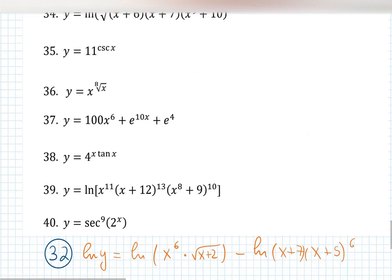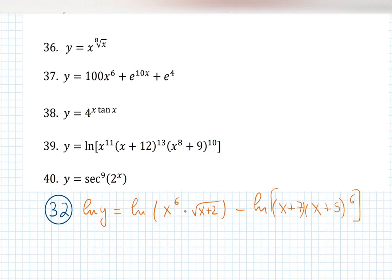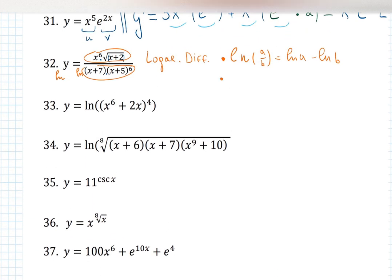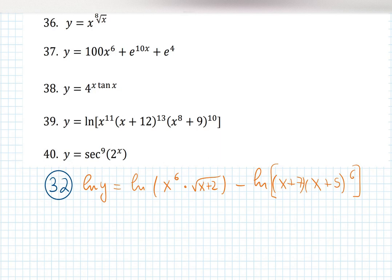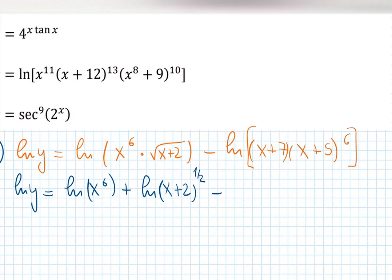Now I have a log of a product. The property for logs says log of a product is a sum of logs. I'll put brackets to show the products. So we get ln of x to the 6, plus ln of x plus 2 — and I'll rewrite the square root as a one-half exponent, you'll see why in a second — minus ln of x plus 7, minus ln of x plus 5 to the 6.